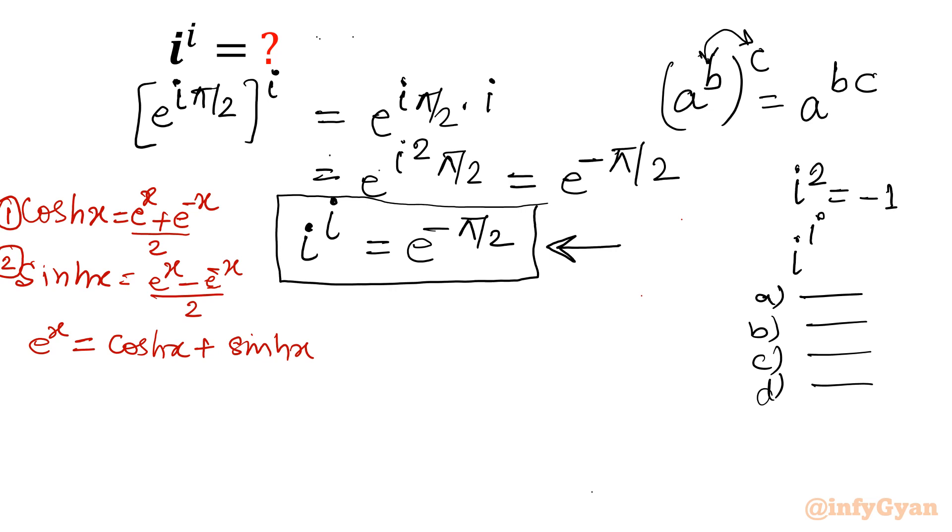And similarly, if you are taking away, if you are subtracting equation 2 from equation 1, then you will be calculating e^(-x). So that value will be cosh x minus sinh x.